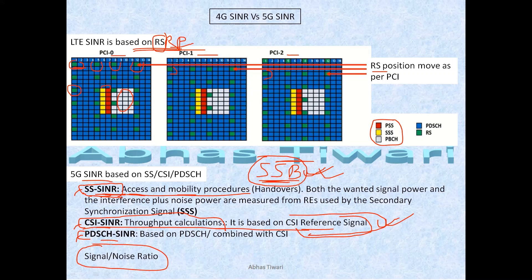There is one more SINR called PDSCH-SINR, which some UEs are capable of reporting. The drawback of CSI-SINR is it is not present in every subframe — it depends on UE presence and CSI periodicity. For PDSCH, which is your data channel, it is always available. So PDSCH can be used for reporting in combination with CSI for SINR reporting, and this method is also used by some UEs.